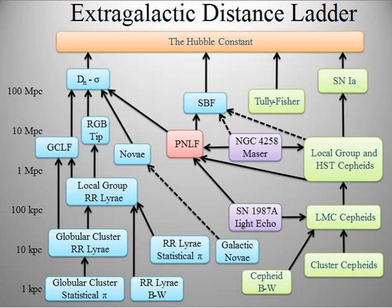Type Ia supernovae are some of the best ways to determine extragalactic distances. They occur when a binary white dwarf star begins to accrete matter from its companion star. As the white dwarf gains matter, eventually it reaches its Chandrasekhar limit of 1.4 solar masses. Once reached, the star becomes unstable and undergoes a runaway nuclear fusion reaction. Because all Type Ia supernovae explode at about the same mass, their absolute magnitudes are all the same, making them very useful as standard candles.